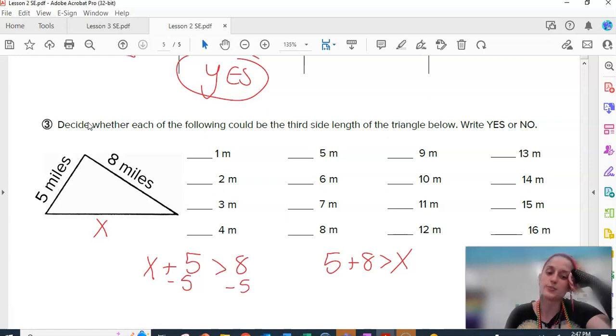Isolate x, subtract 5 from both sides, x is bigger than 3. 5 plus 8 is 13, x is smaller than 13. Is 1 bigger than 3? No. So, you're going to put a no here. Is 2 bigger than 3? No.